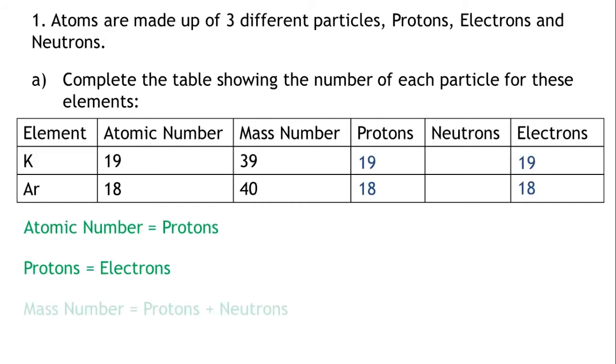Mass number equals the number of protons plus the number of neutrons. We can rearrange this formula to give us neutrons equals mass number minus protons.